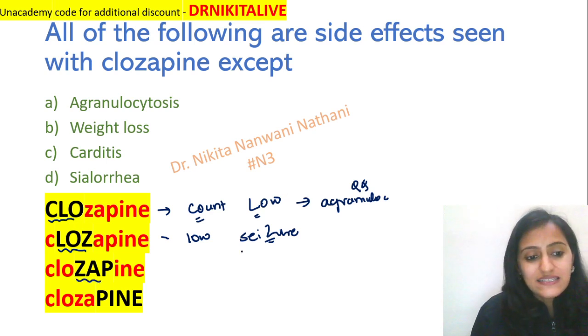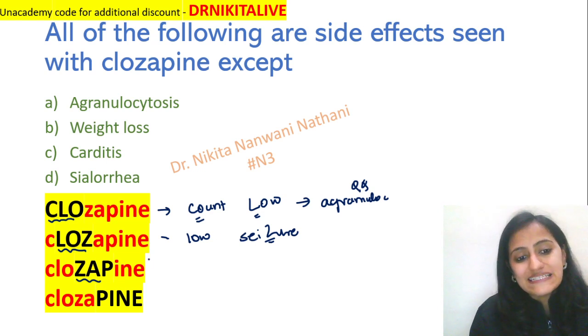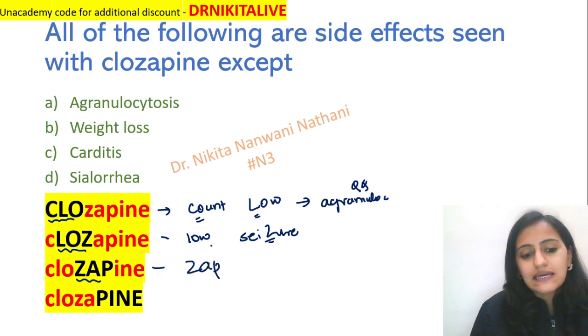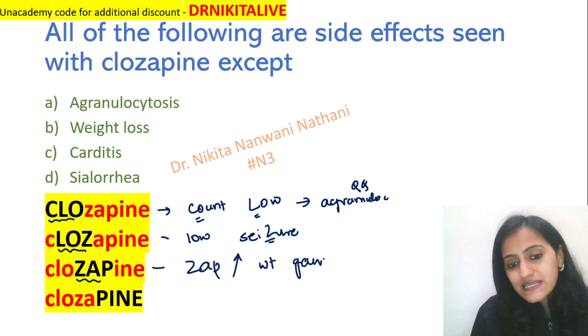Then we go to the next letters Z-A-P — 'Zap' — which means it causes sudden, dramatic weight gain. So it leads to weight gain and metabolic syndrome.